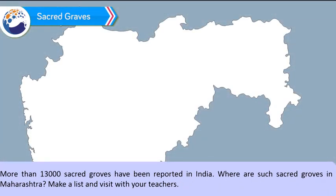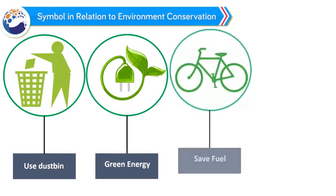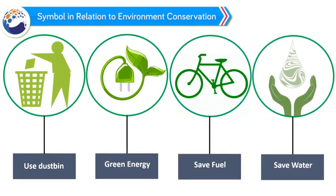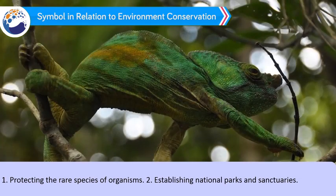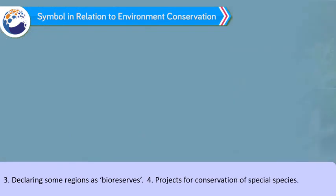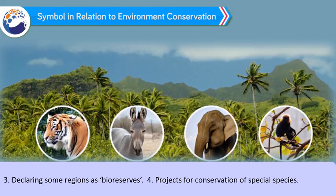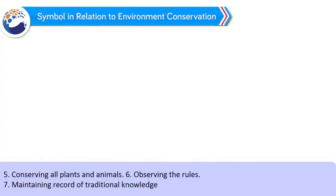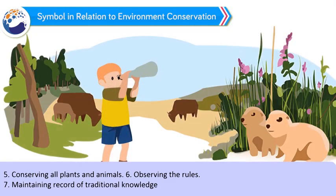Where are such sacred groves in Maharashtra? Make a list and visit with your teachers. These are some symbols used for environment conservation: Use dustbin, Green energy, Save fuel, Save water. How can biodiversity be conserved? Methods include: protecting rare species of organisms, establishing national parks and sanctuaries, declaring some regions as bio-reserves, and projects for conservation of special species.